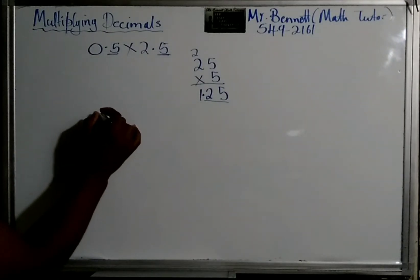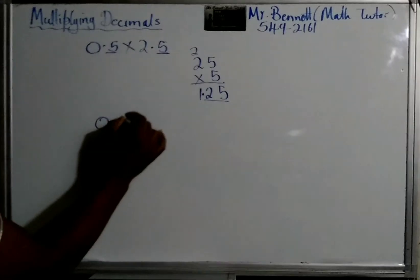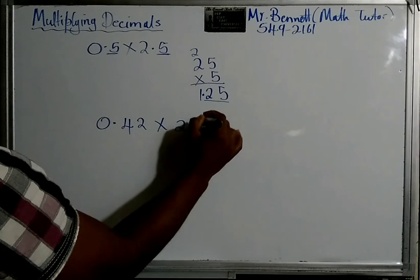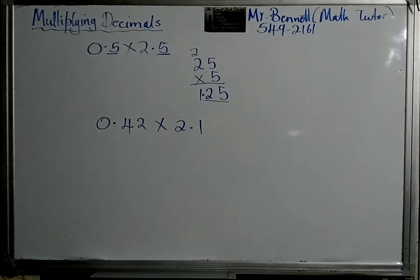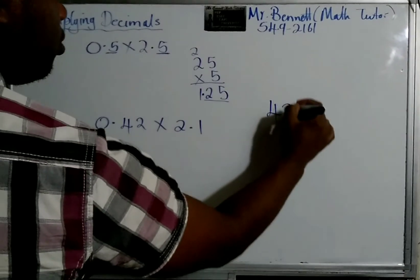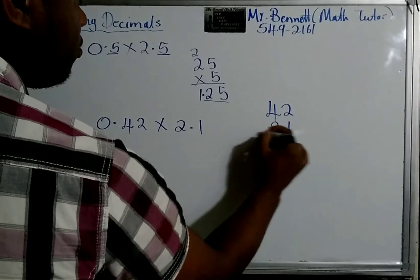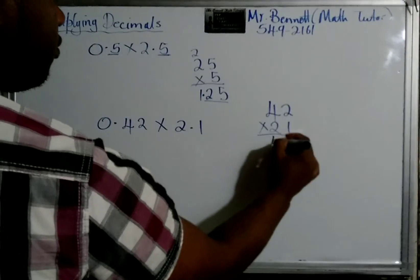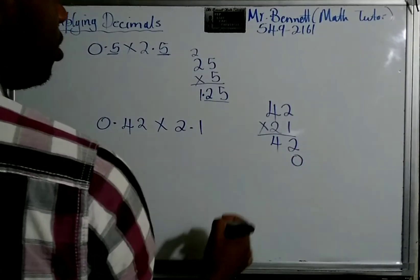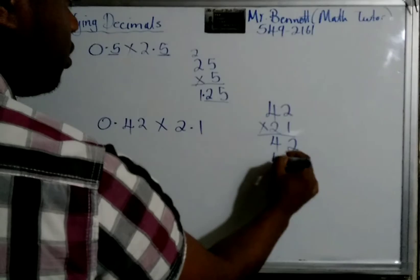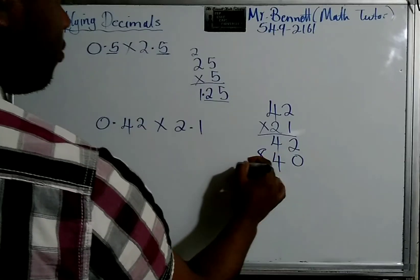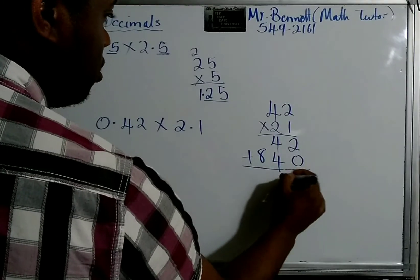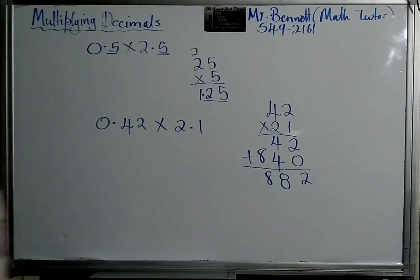And look at this one. Say we have 0.42 times 2.1. You multiply 42 by 21. So, 1, 2, 2, 1, 4, 4. A 0 to hold the space.